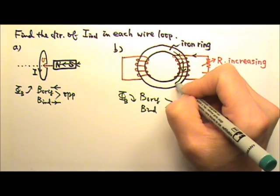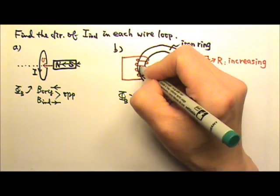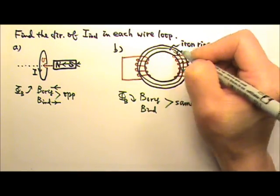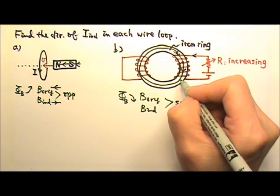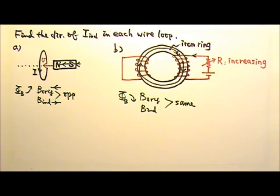And that means the field lines which stay inside the iron ring would go around like this. So down on the right side, up on the left side.